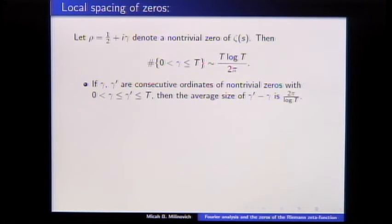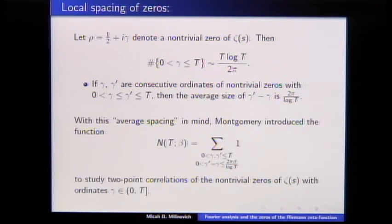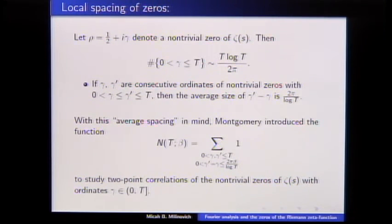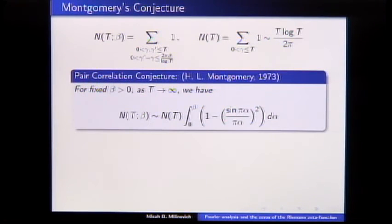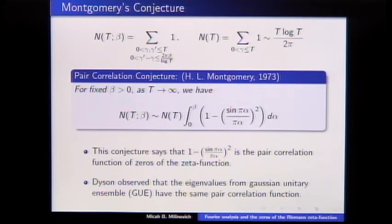The setup we've seen a few times during this conference: the number of zeros up to height T is T log T over 2 pi, so the average spacing up to height T is 2 pi over log T. Montgomery introduced his pair correlation function: summing over two sets of zeros, you want to count the number of pairs less than beta times the average spacing. I'll call this N(T, beta) — the number of pairs of zeta zeros closer than beta times the average spacing.